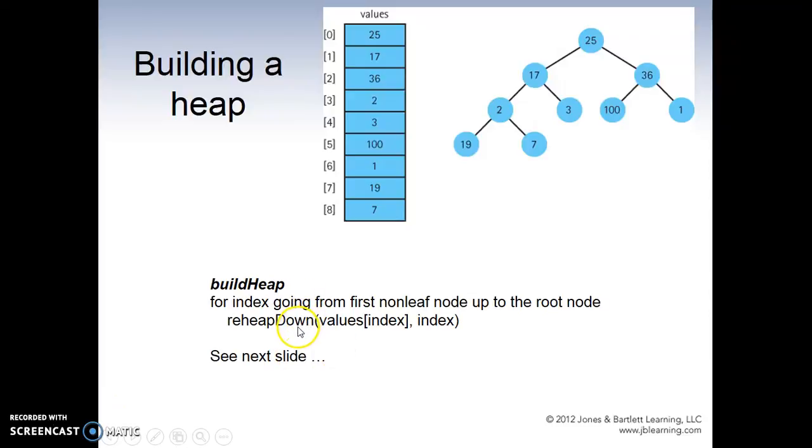For index going from first non-leaf node up to the root node, reheap down. For index going from the first non-leaf node up to the root node, reheap down, passing the value of the index and the index.